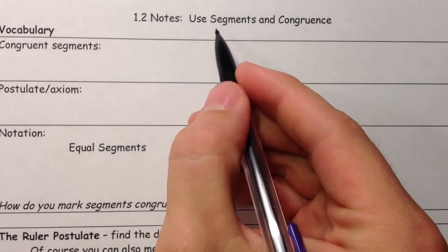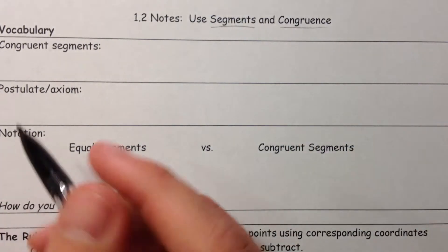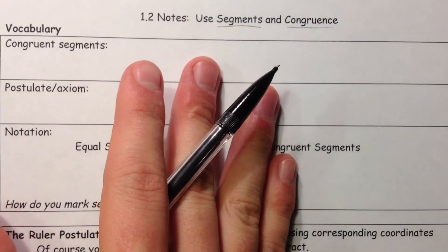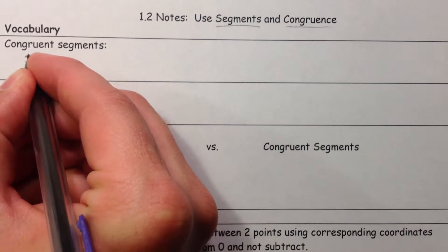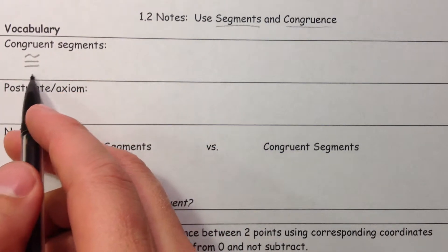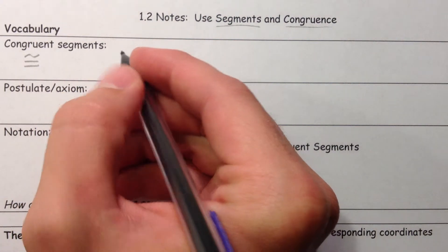Alright, we're going to talk about segments, meaning line segments, and those segments being congruent. Congruent segments - congruent is this new symbol that we use, and it's going to mean that the segments are equal in length.